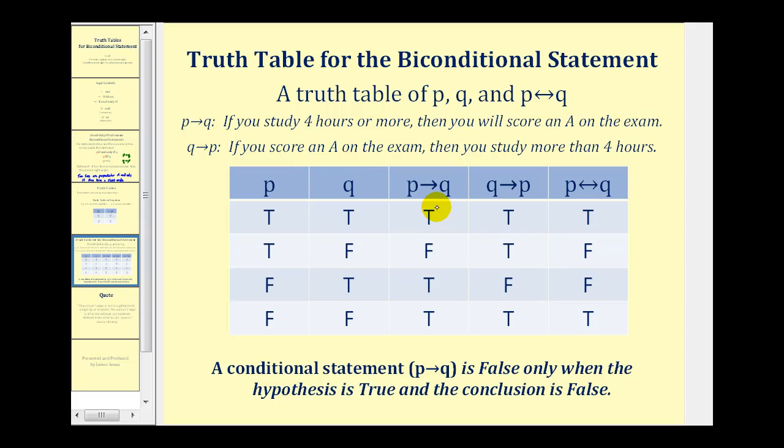And probably the most important thing to remember here is that a conditional statement if p then q is only false when the hypothesis is true and the conclusion is false. So taking a look at this statement here, if p then q will identify when the hypothesis is true and the conclusion is false because that's the only time when this conditional will be false.